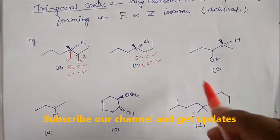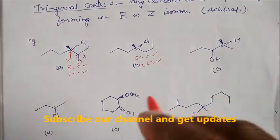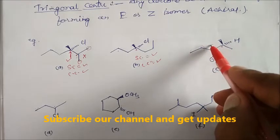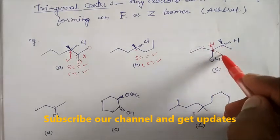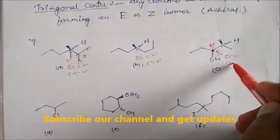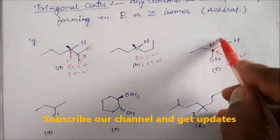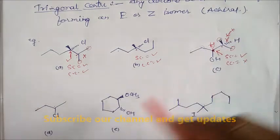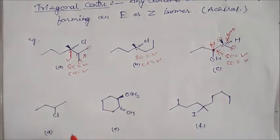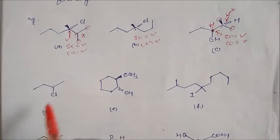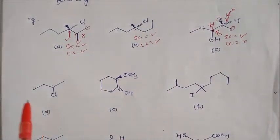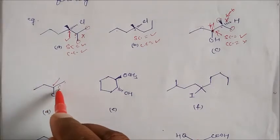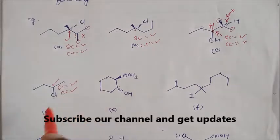Now in this case, you can see one, two, three — four different groups are there. So we can say a stereogenic center is there because four different groups are there, and after exchanging the groups are also different. So the stereogenic center is there and the chiral center is also there. In this case, there is OH. There are different groups and one hydrogen present here. So the stereogenic center is present here but the chiral center is not present here.